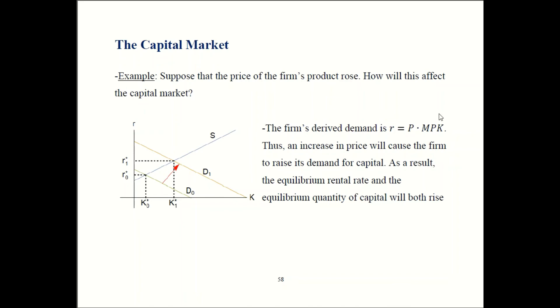I'll assume you have finished the problem by now. The derived demand is price times marginal product of capital. If price goes up, that means the firm's demand for capital is also going to go up. If P goes up, P times MPK also goes up. Demand is going to shift out. We start at D0 back here, but now we're going to be at D1 out there. The old equilibrium is where old demand meets supply. That gave us this rental rate and this quantity of machines. The new equilibrium is where the new demand curve intersects supply.